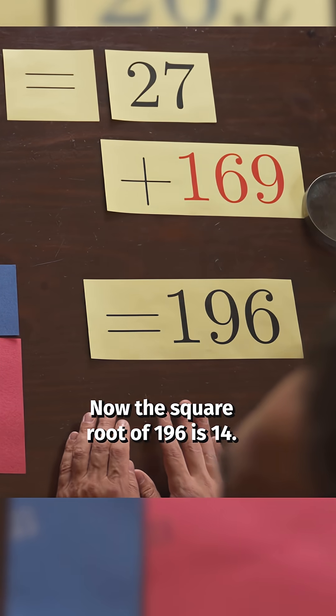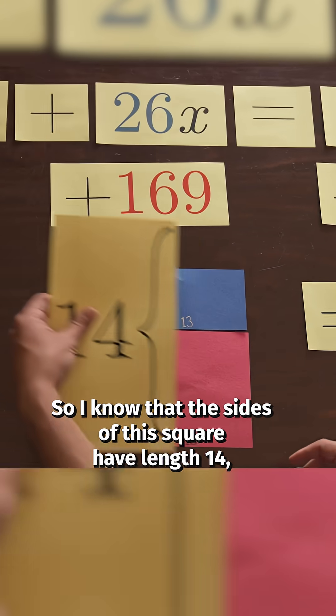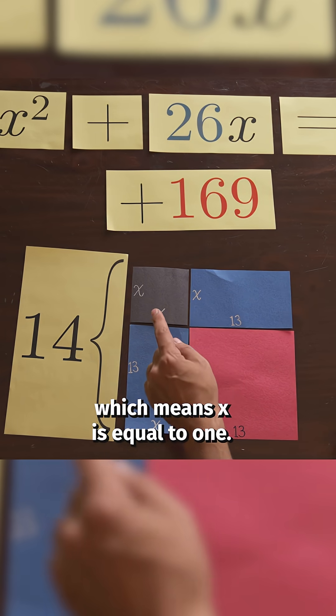So now I have this larger square with sides of length x plus 13 and it is equal to 196. Now the square root of 196 is 14. So I know that the sides of this square have length 14, which means x is equal to 1.